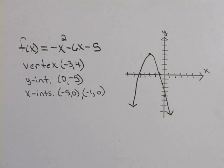So this is the graph of f(x) = -x² - 6x - 5.